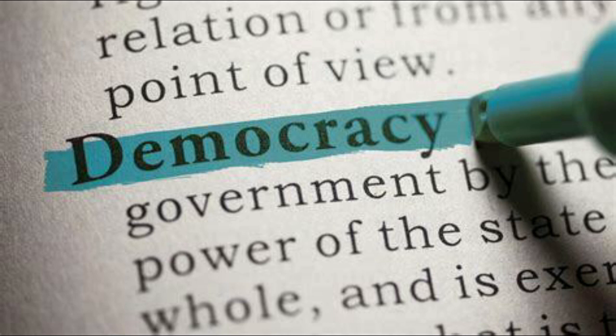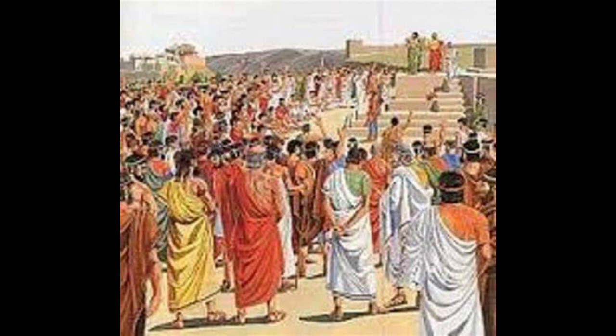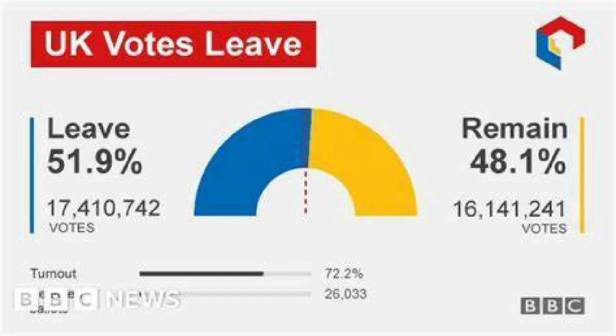But first, what is democracy? The literal meaning of democracy is 'rule by the people.' In a democratic system of government, the general public can directly decide on government policy through the process of elections. This can be divided into direct democracy, where the public directly votes on individual pieces of policy. An example would be the Brexit referendum, when the public was given the question: do you want to leave the EU? And by 52 to 48 percent, they voted yes.